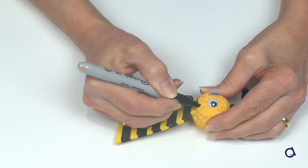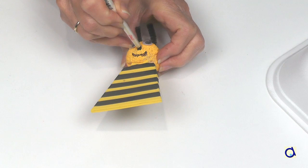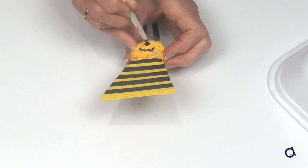Take an indelible black marker and draw the mouth of the bee. To finish the bee's face, make a black dot to represent the bee's nose using the back of a paintbrush and black paint. Let dry completely.